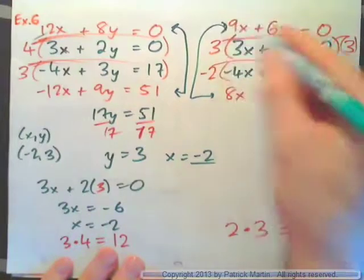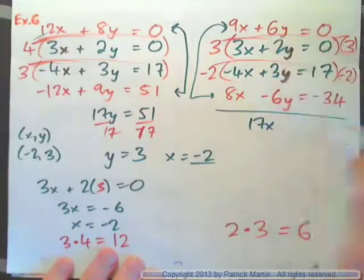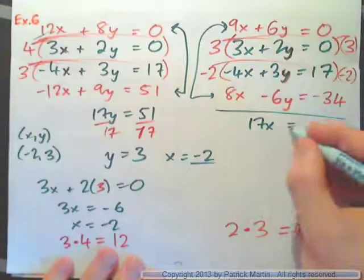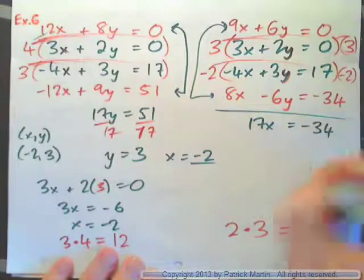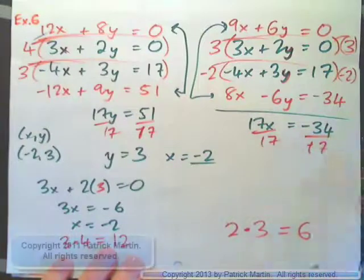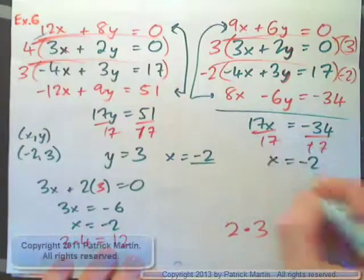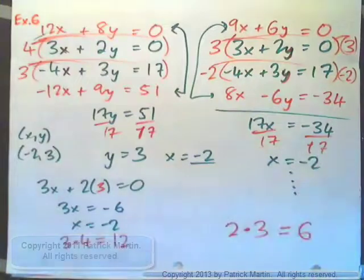9 and 8 is 17x. 6y, negative 6y is 0. And then 0 and negative 34. And then divide by 17. And you have x is negative 2. And then you'll eventually find y. Alright, so there's other ways of doing it.